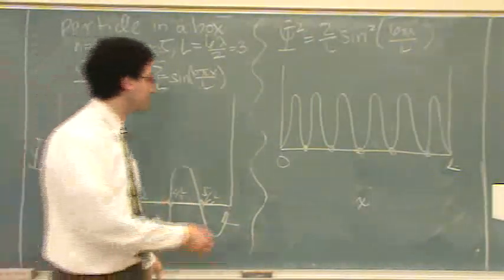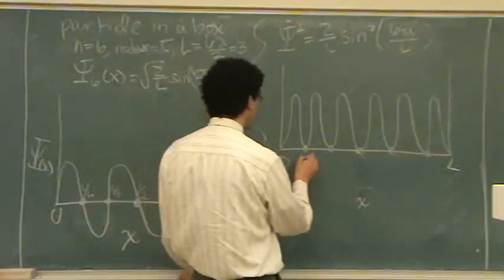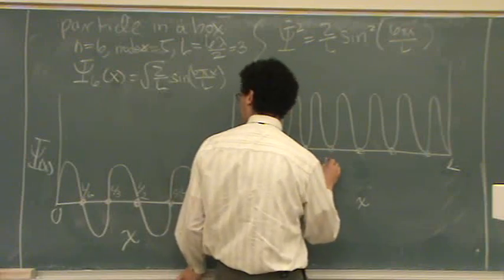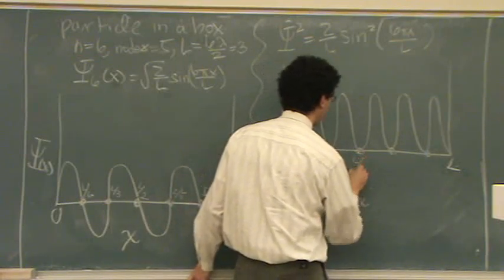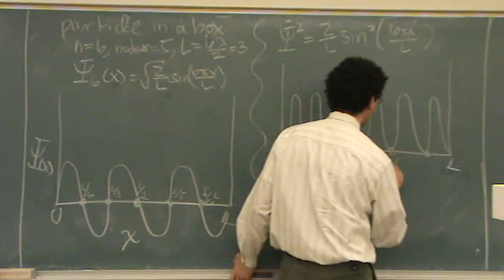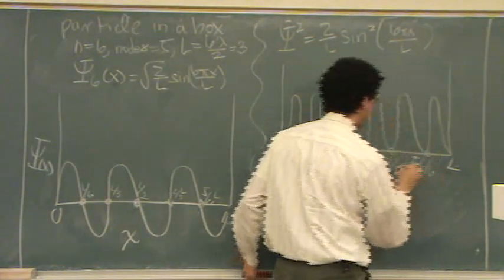So, now, I could... You already know where the nodes are. That's L over 6. I'll just rewrite them. L over 3. L over 2. 2 L over 3. 5 L over 6.